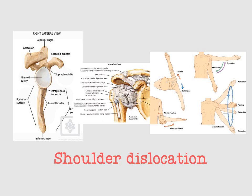There are many underlying risk factors of glenohumeral joint dislocation. The first of them is a shallow glenoid cavity. The glenoid cavity is the cavity in the scapula that receives the head of the humerus, and a shallow glenoid cavity will lead to shoulder joint dislocation in many cases.